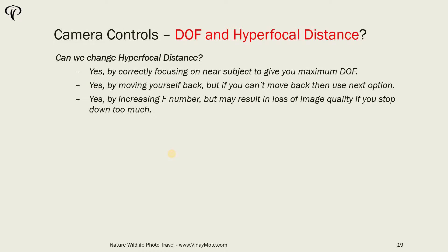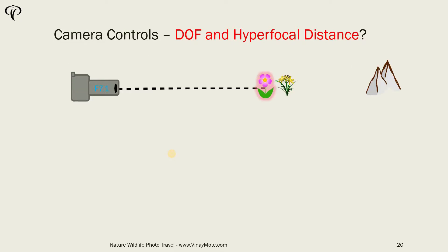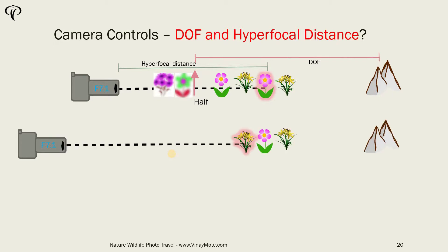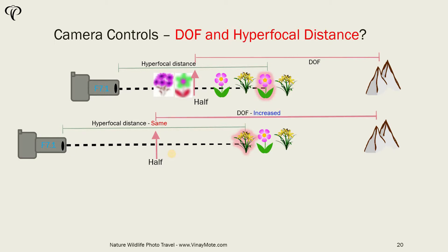Let's see it by example. That's our scenario where we are focusing on the pink flower, and that's our hyperfocal distance — from half to infinity we have depth of field, but these two flowers are out of focus. The first option is to move ourselves a little bit back, increasing the distance between the camera and the subject. In that case the hyperfocal distance stays the same, however our half-distance point has moved, so our depth of field has increased and ultimately those two flowers are now in focus.